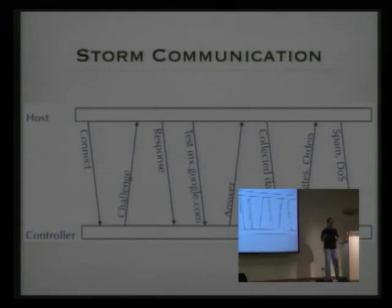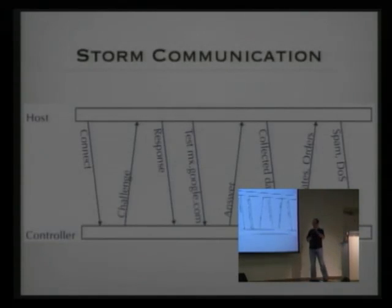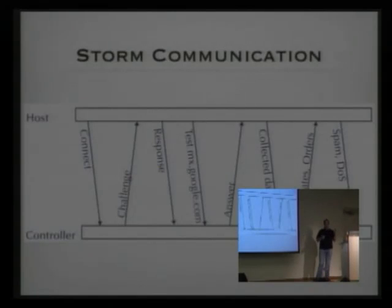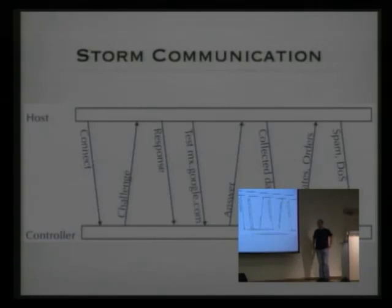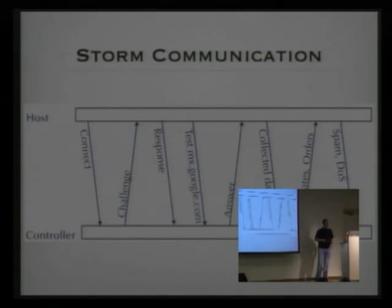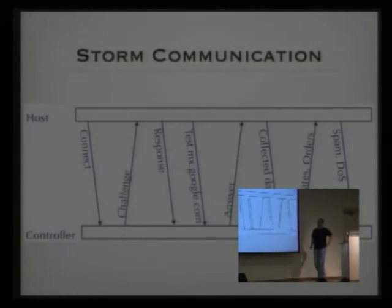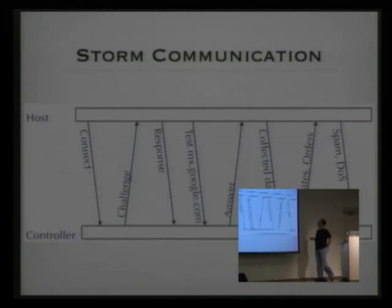The controller then either sends the infected node a spam template — the whole mail body, a set of recipient addresses, and a set of sender addresses — and based on this template the node generates a new spam mail in each iteration and sends it out. Or it can receive orders to start a distributed denial of service attack against other systems, such as antivirus or anti-spam companies, and then the bot starts spamming or DDoSing.